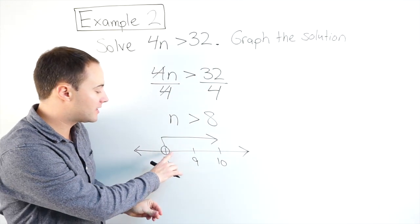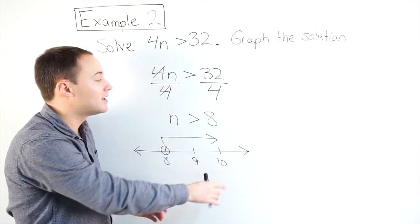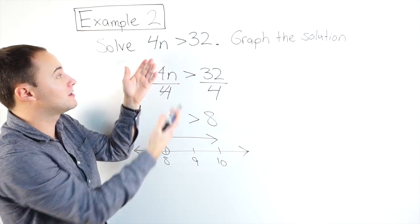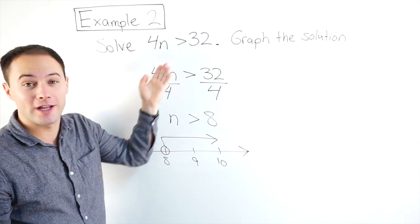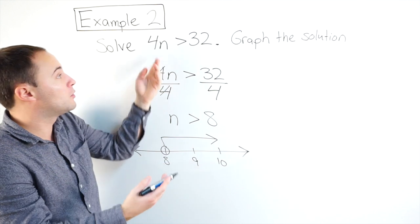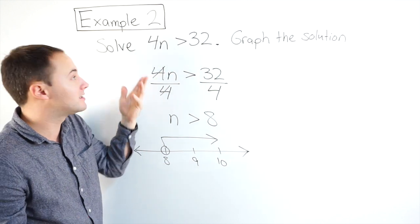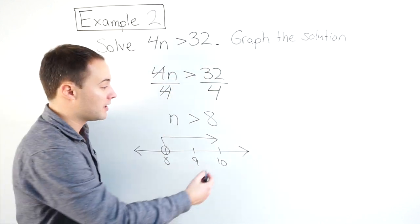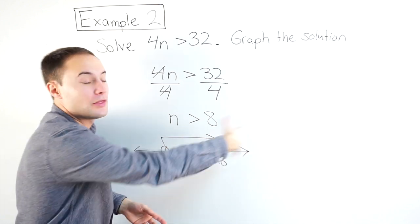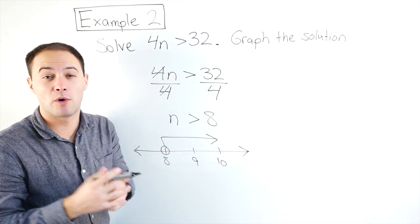Any number that's greater than 8 would be a solution, right? 10 would be a solution, because 4 times 10 is 40, that's greater than 32. 9 would be a solution, 4 times 9 is 36, that's greater than 32. A million would be a solution, anything greater than 8. Let's try one more example.